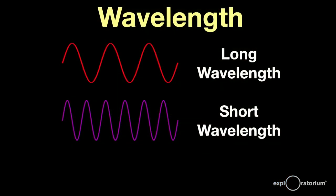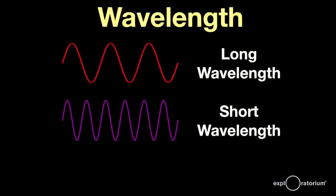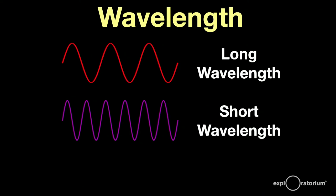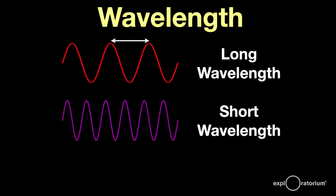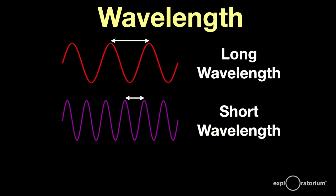If the wave vibrates slowly, the peaks and troughs of the wave are further apart. Vibrating quickly brings the peaks and troughs closer together. If you measure the distance from peak to peak, or trough to trough, you get a distance called the wavelength.